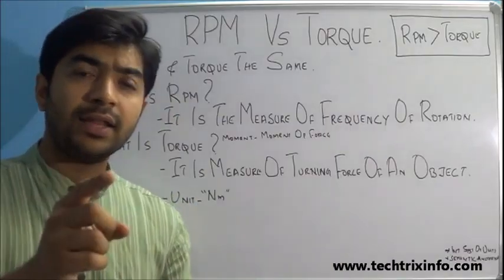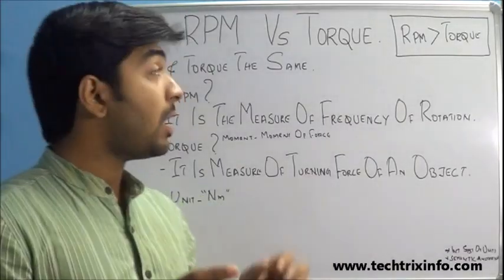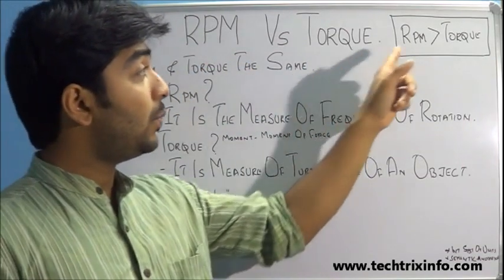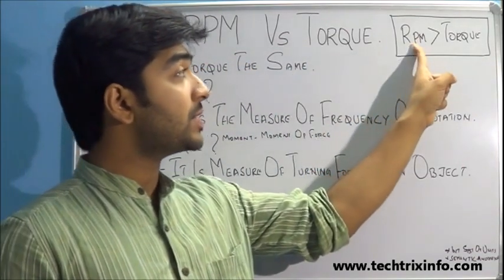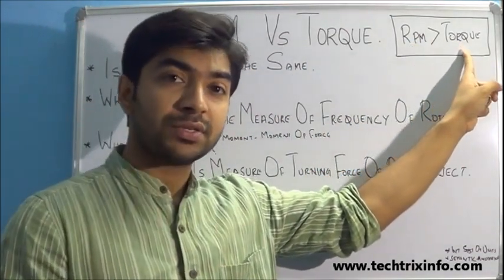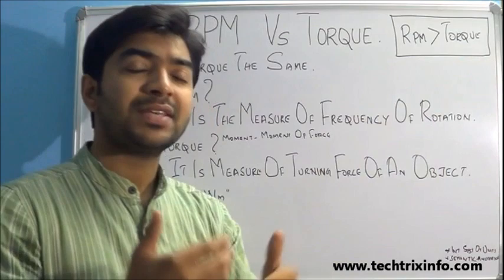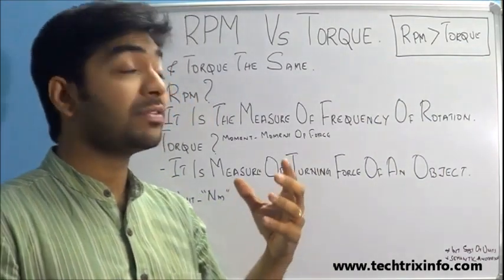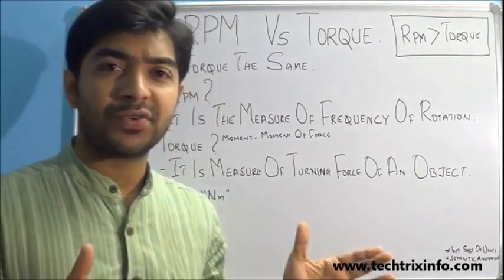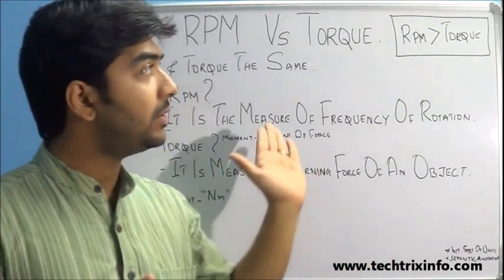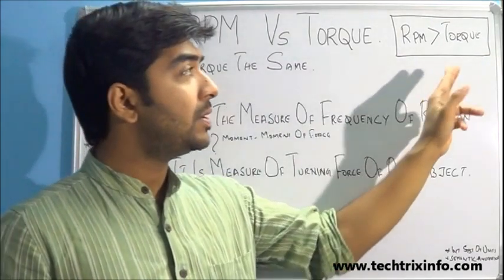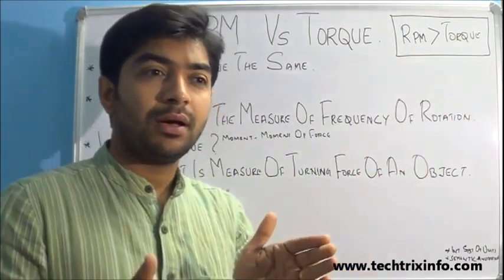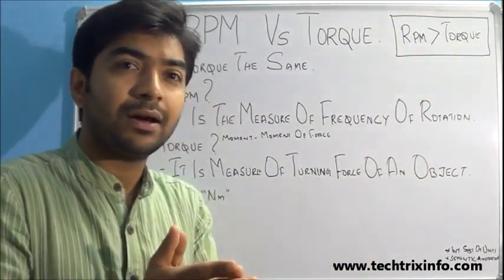Another relation between RPM and torque is that when RPM increases, torque reduces. This happens because of the increase in friction and also due to other constraints — with increased RPM the torque will tend to reduce.